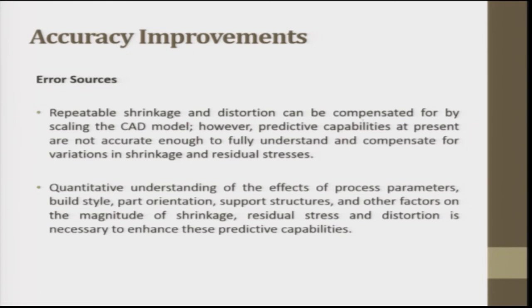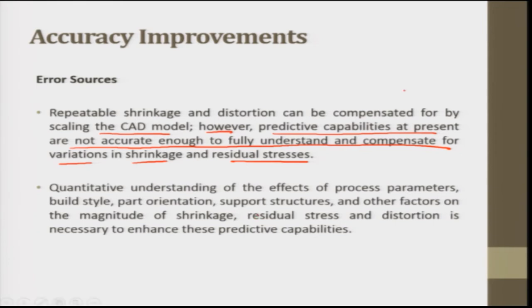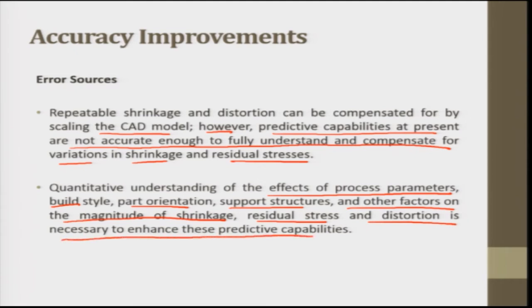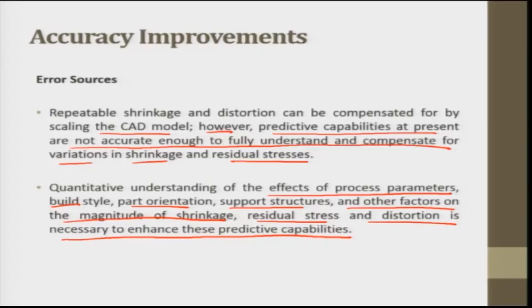Repeatable shrinkage and distortion can be compensated by scaling the CAD model. However, predictive capabilities are not yet accurate enough to fully compensate for variations in shrinkage and residual stresses — similar to casting, where shrinkage allowance and draft allowance are used. For parts requiring high accuracy, extra material must be added — either a thin layer throughout the part or in areas where high shrinkage is expected — which is then removed by subtractive means to achieve the desired accuracy.